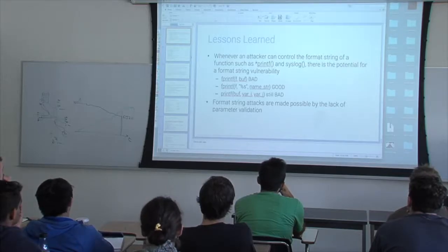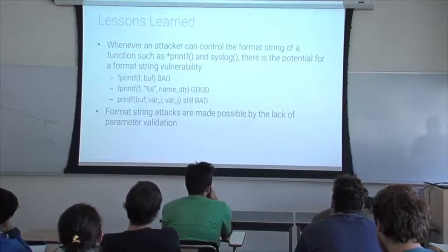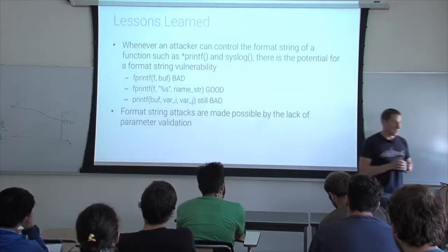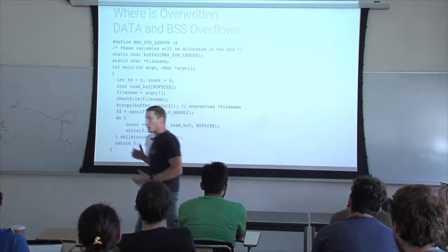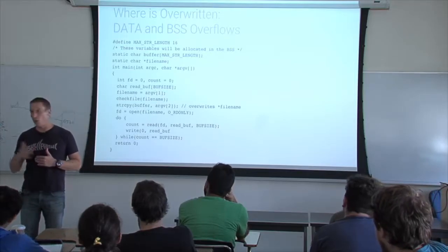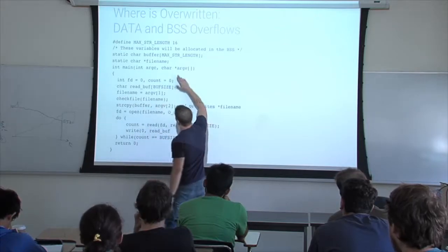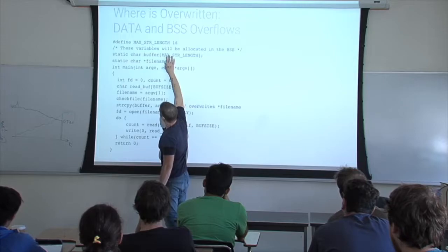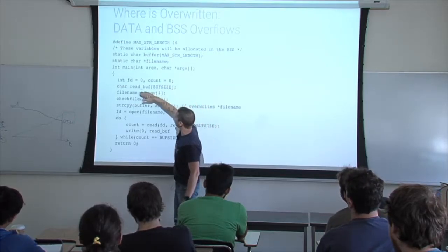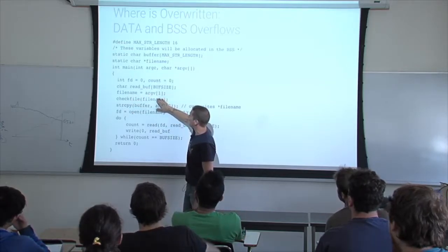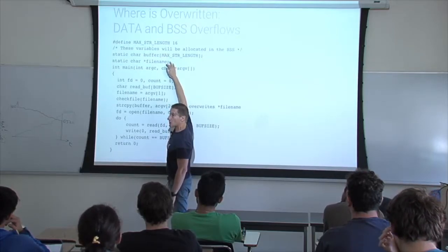Let's proceed with our review of exploitation techniques. Last time we talked about printf and all the shenanigans possible with printf. Now we want to give an example of the data section and BSS section. Those are sections that contain global variables, either initialized or not initialized. There are two variables that, because they're static, end up in this data section. There is something that sets the file name to an argument, something that checks the actual file name, and then there is a buffer overflow here. This buffer overflow can actually overflow not on the stack, but in the BSS.